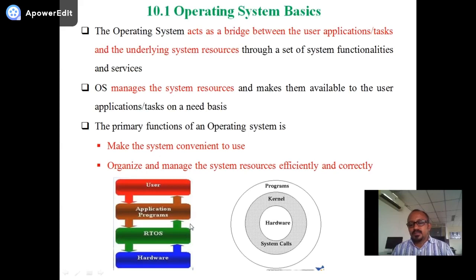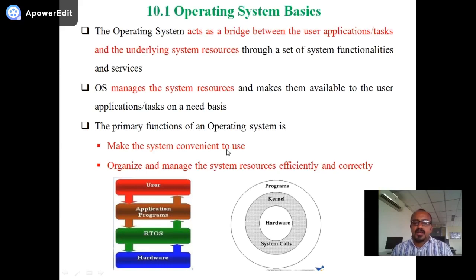The primary function of the operating system is making the system convenient to use. When there are many applications, it becomes very difficult for the programmer or developer to manage and organize the system resources efficiently and correctly. The OS uses a scheduler, which allocates time to every function, program, or resource to execute its related programs.